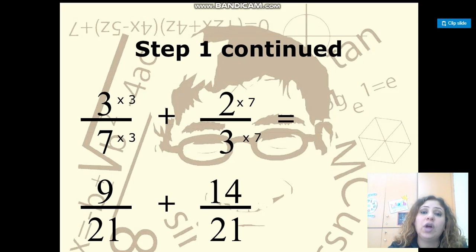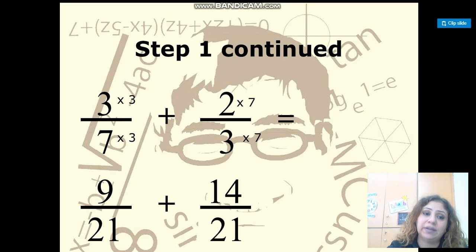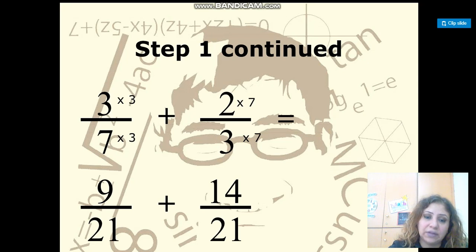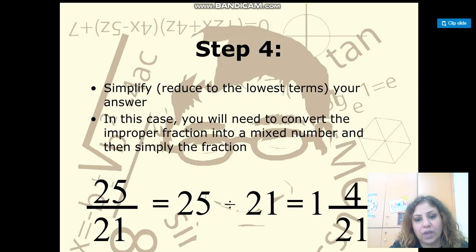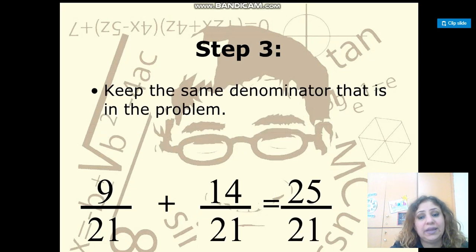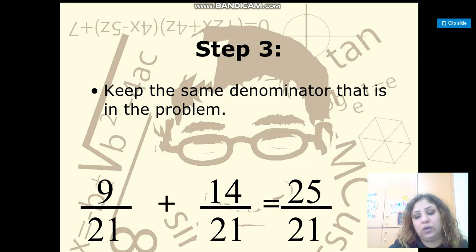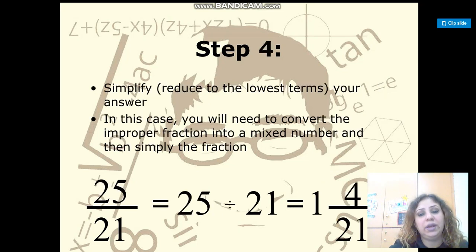I need to change all denominators to 21. I will multiply 7 by 3 and multiply 3 by 7, and of course multiply the numerator by the same number. I will get the equivalent fractions equal to the original ones. Then I will add the top numbers and get 25, with the bottom number 21. So I get 25 over 21. It is an improper fraction, so I will change it to a mixed number: 1 and 4 over 21.